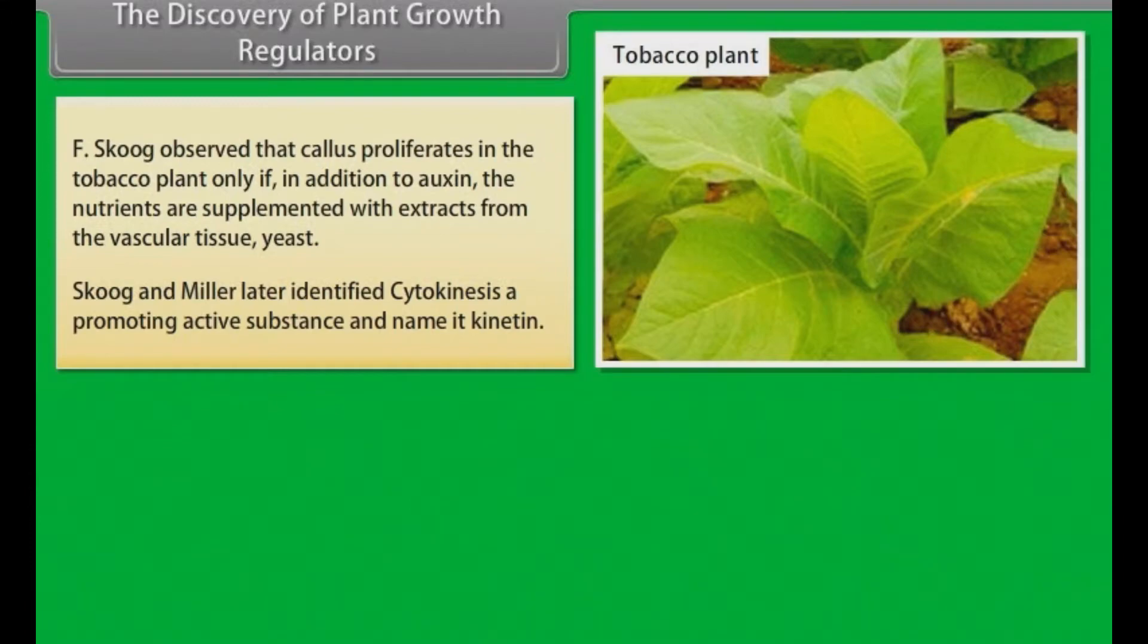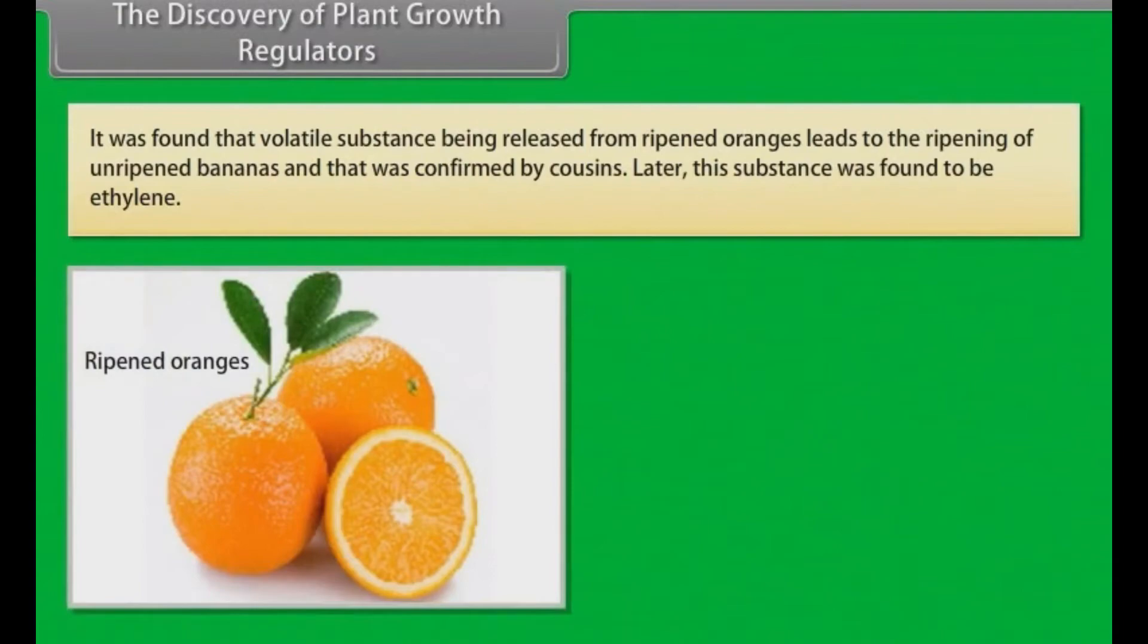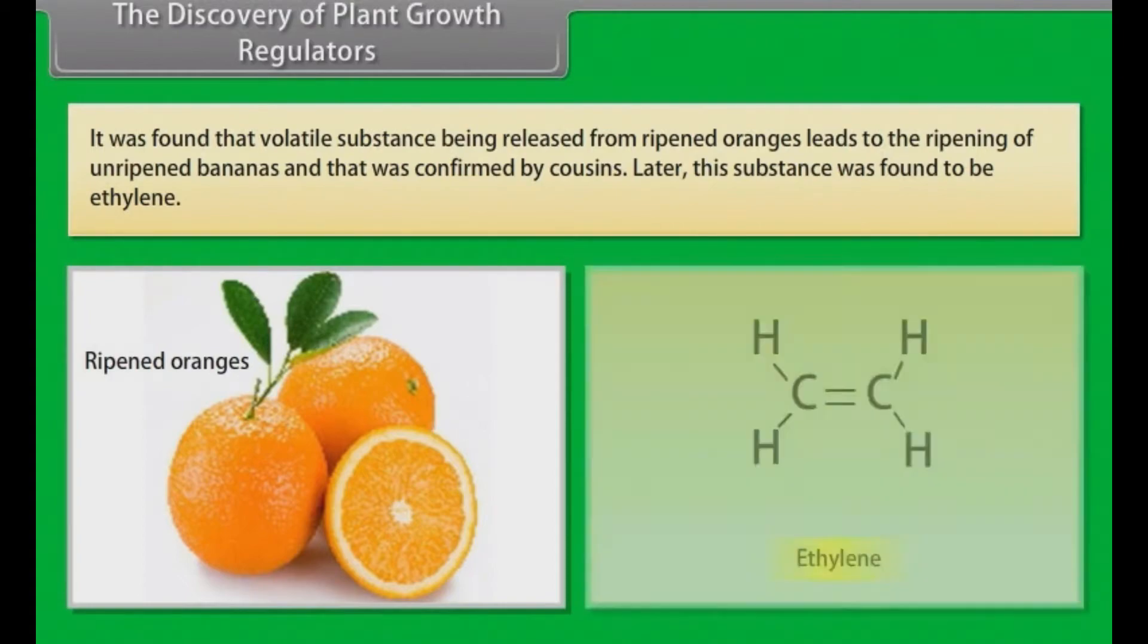Three independent workers reported three different kinds of inhibitors in plants: Inhibitor B, Abscission II and Dormin. Later, all the three inhibitors proved to be chemically identical and named it abscisic acid, ABA. It was found that volatile substance being released from ripened oranges leads to the ripening of unripened bananas and that was confirmed by Cousins. Later, this substance was found to be ethylene.